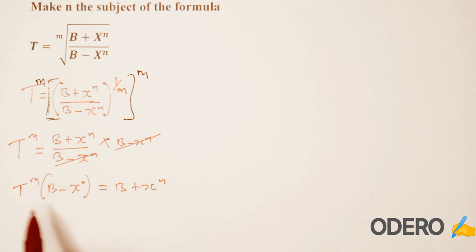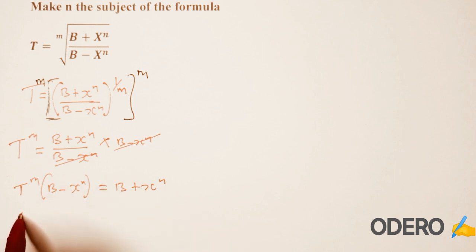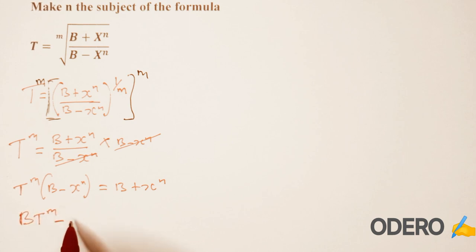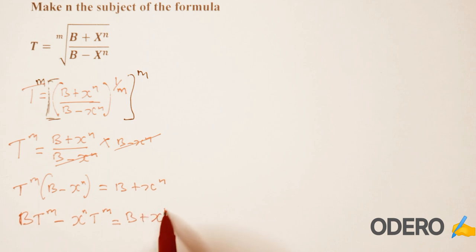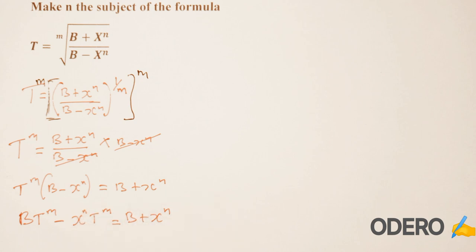Therefore, if you open this bracket you're going to have b multiplied by t raised to m minus x raised to n times t raised to m, then on your right you're going to have b plus x raised to n. Therefore we can collect those that are similar — anything that has n must come on one side.